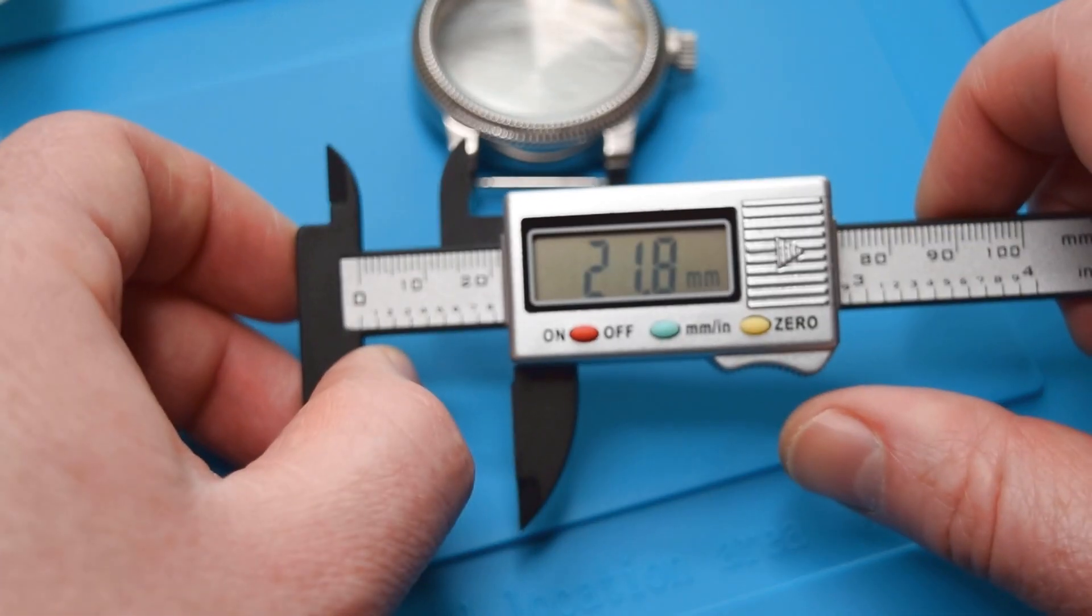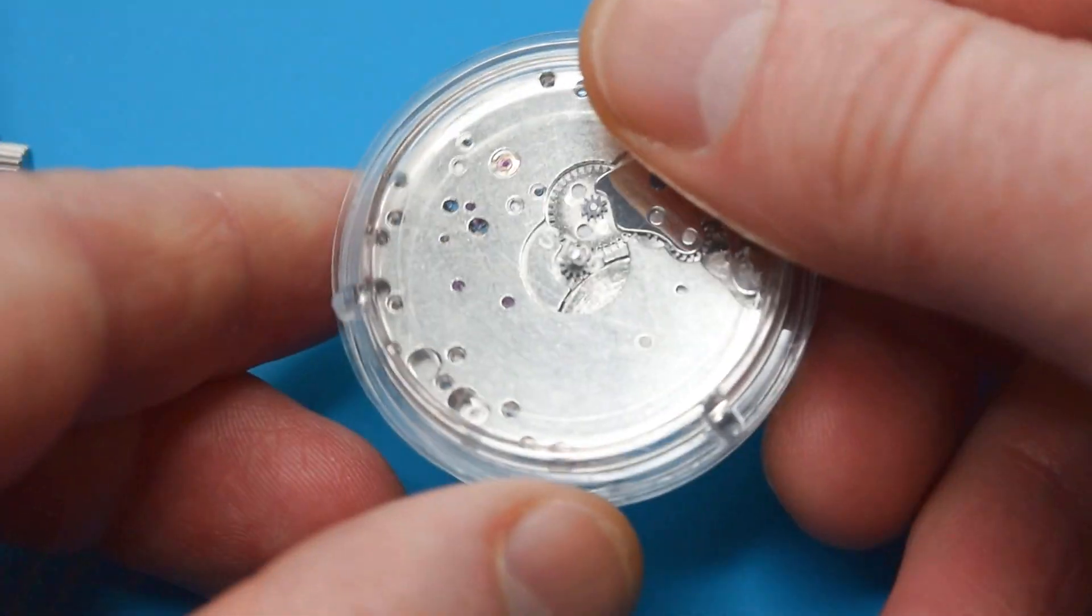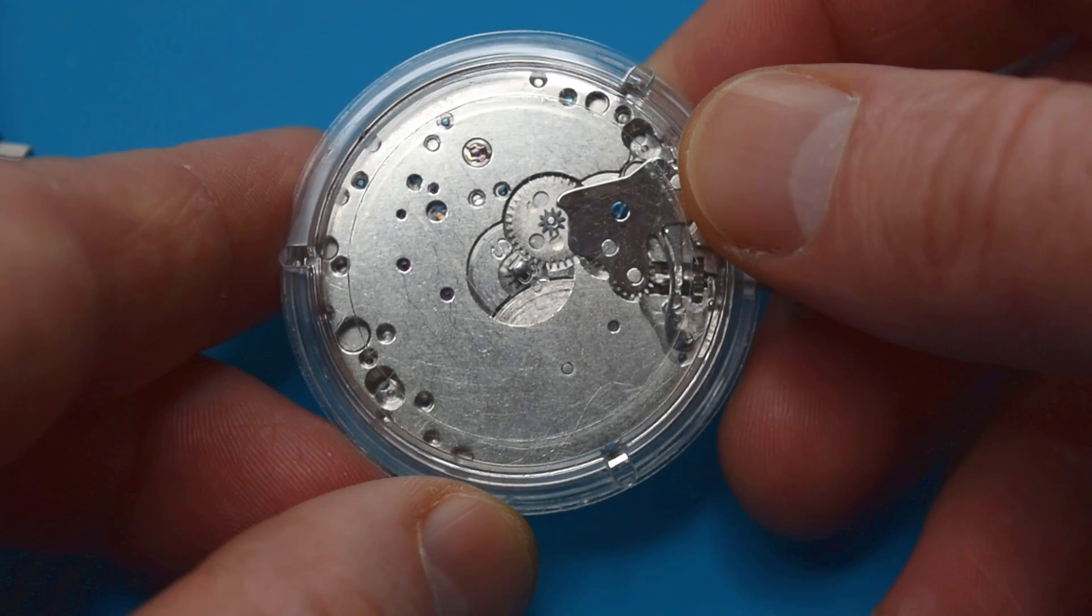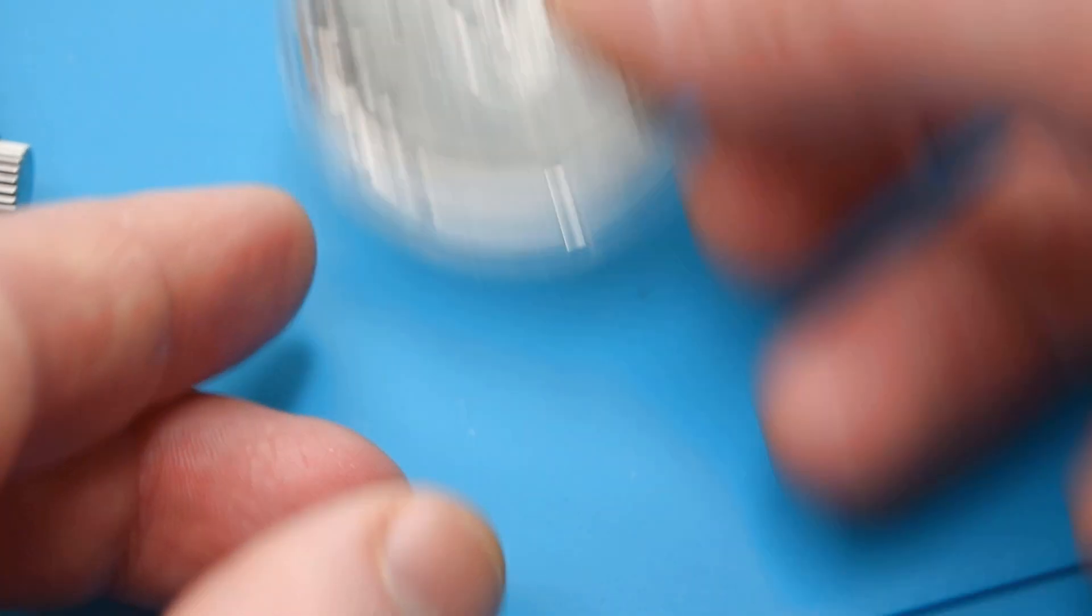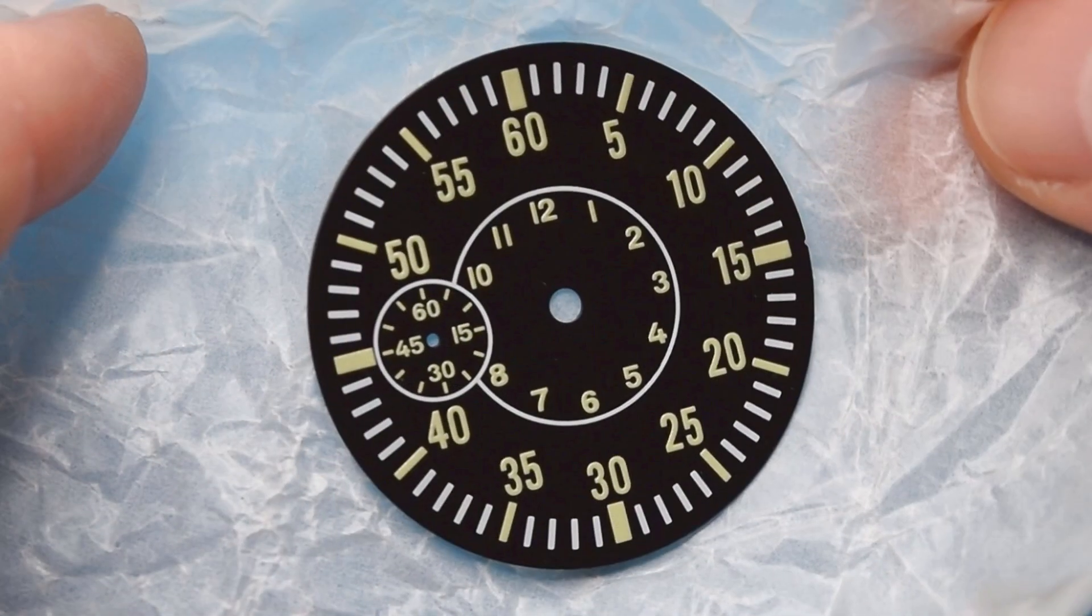Lug to lug 22 and that's the movement. I will use Seagull ST36 which you can buy on Amazon, eBay, AliExpress and the price is exactly for hobbyists. That's the dial.